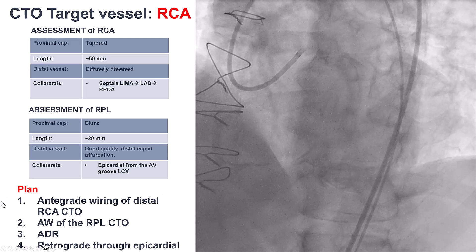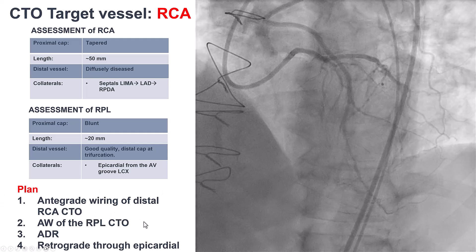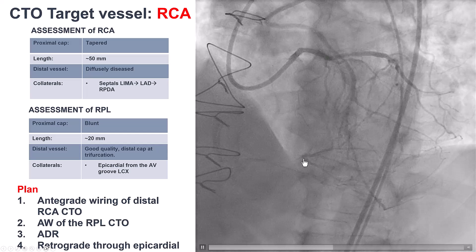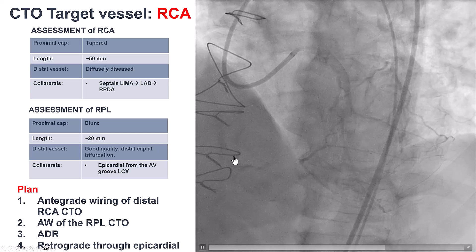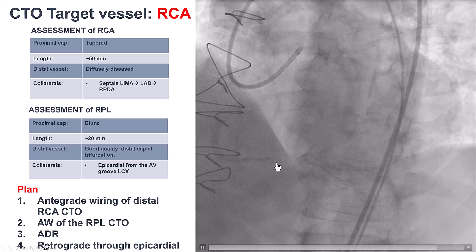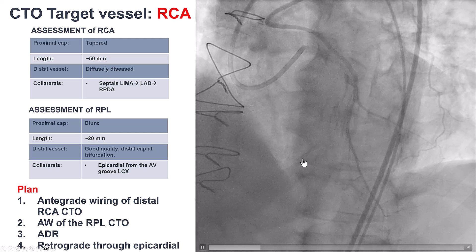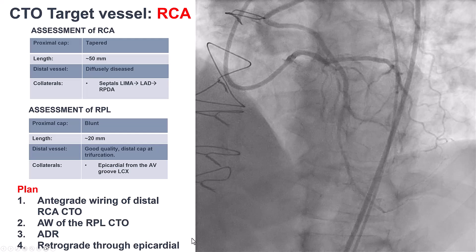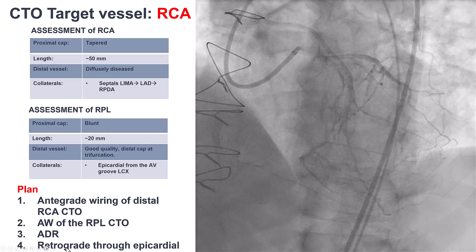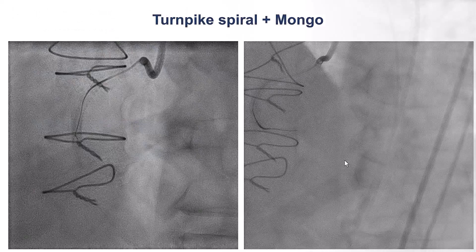Our plan was to start with antegrade wiring of the distal right coronary artery, and then see if we could continue with antegrade wiring of the posterolateral. If that didn't work, we would try ADR — although ADR would be challenging here because of the bifurcations and calcium. And if everything failed, we would attempt retrograde crossing through the epicardial collaterals.